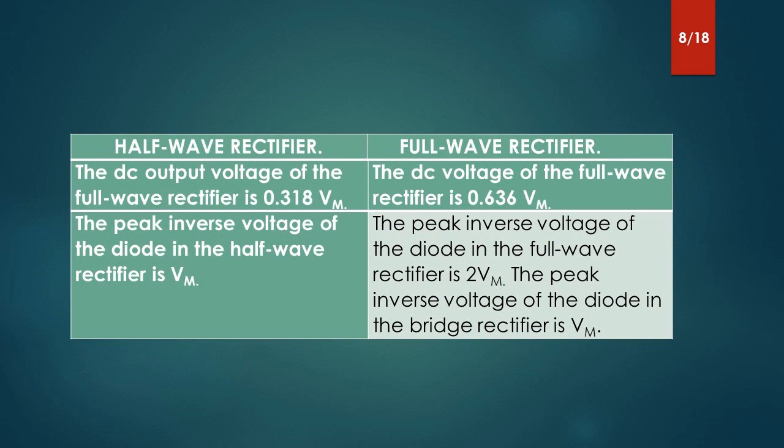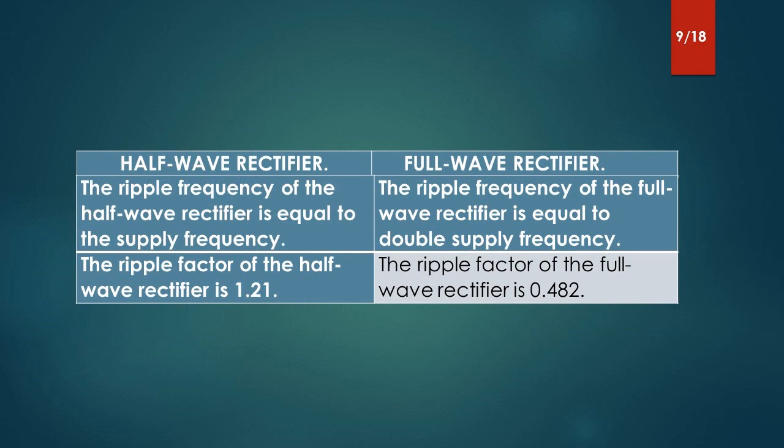The DC output voltage of the half-wave rectifier is 0.318 Vmax. The DC voltage of the full-wave rectifier is 0.636 Vmax. The peak inverse voltage of the diode in the half-wave rectifier is Vmax. The peak inverse voltage of the diode in the full-wave rectifier is 2 Vmax. The peak inverse voltage of the diode in the bridge rectifier is Vmax.